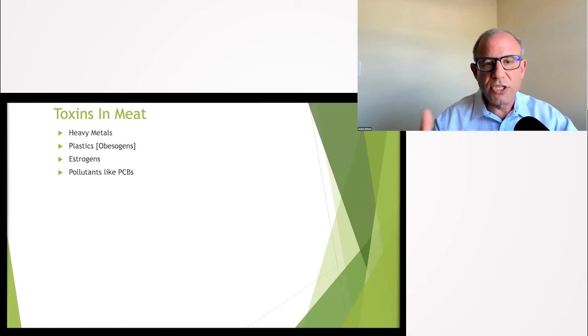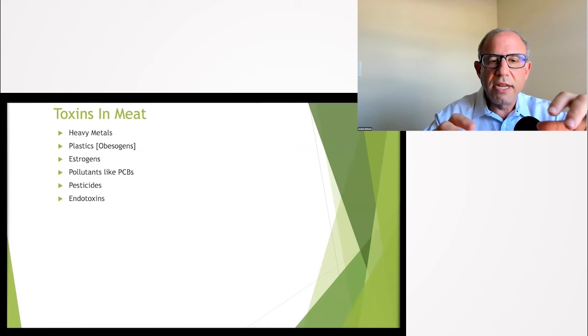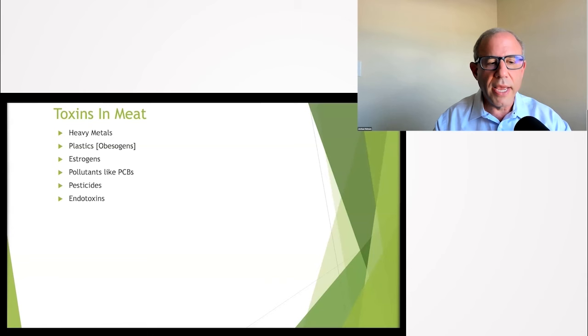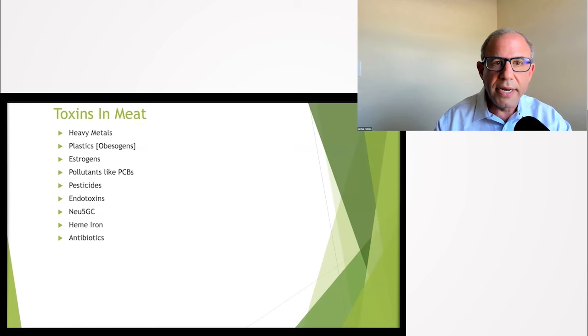If meat is from an animal, a mammal that has sex hormones like estrogen, if you eat an animal's flesh you're getting those hormones. Pollutants like PCBs, pesticides, endotoxins - the cell wall of the gram negative bacteria in the gut of the animals that you might eat. Neu5GC is a sugar that is only found in animals and not found in humans, but if you eat animal products you're exposed to this weird sugar that the body can react to causing inflammation.